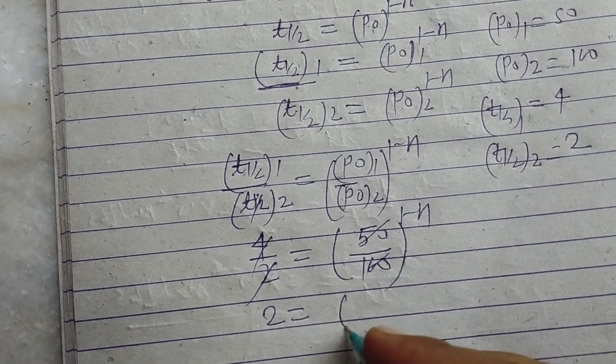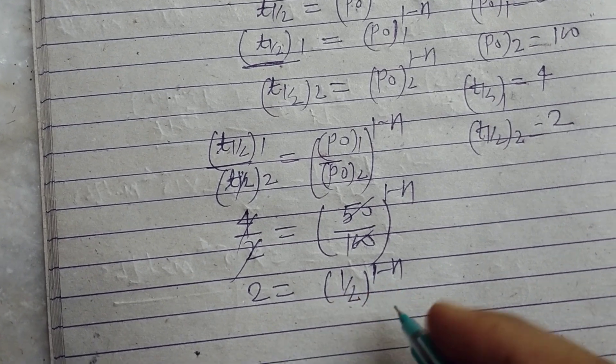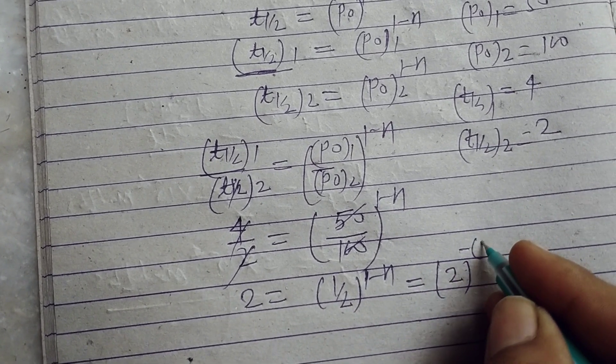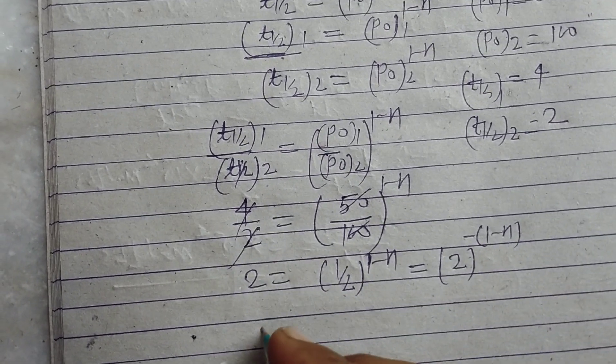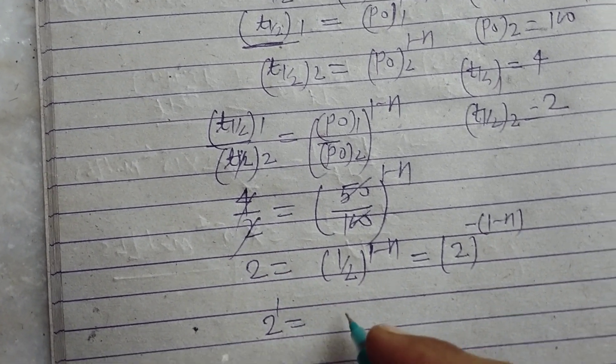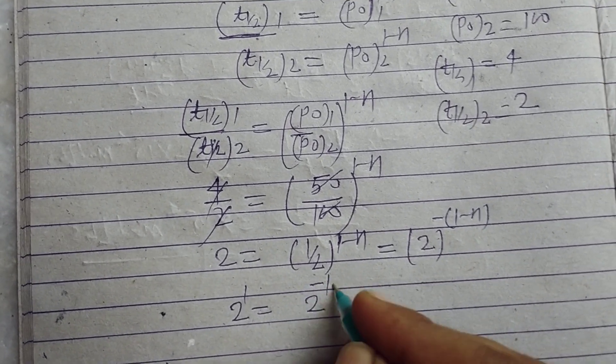Now reversing the fraction, the power becomes negative. So 1 minus n becomes negative 1 plus n. Therefore, 2 to the power 1 equals 2 to the power negative 1 plus n, which is minus 1 plus n.